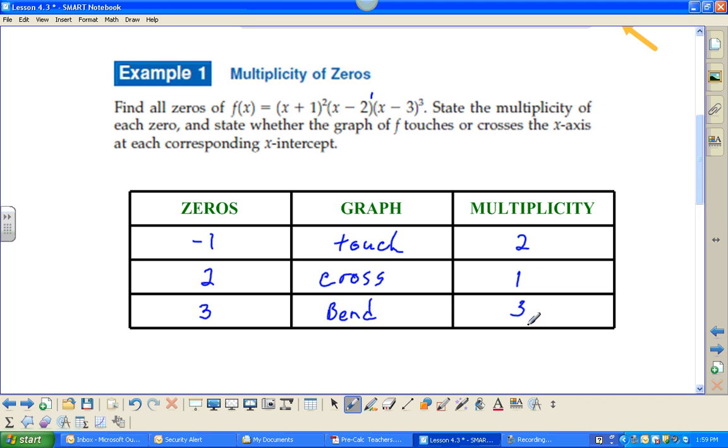One thing is here, if you look at the multiplicity, if I add all those together, they are 6, because that's what the degree of this whole function would be.